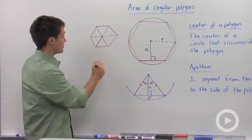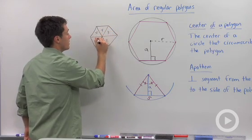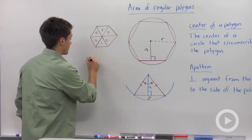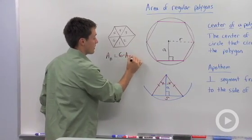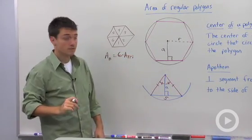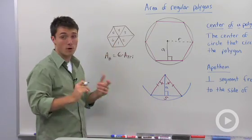So you can say the area of the hexagon is equal to six times the area of one of those triangles. But how do we calculate the area of one of those triangles?